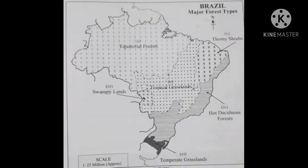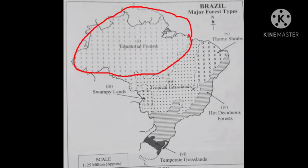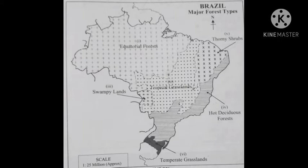The first item in the question is equatorial forest. For the first question, we give the first number — this is the equatorial forest. After that, the second question asks for tropical grassland. You can see that tropical grassland is on the side of the equatorial forest.